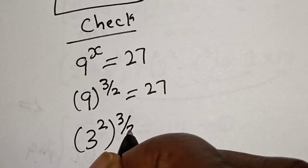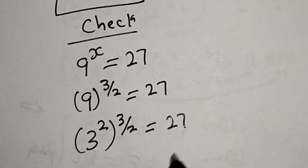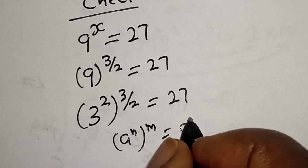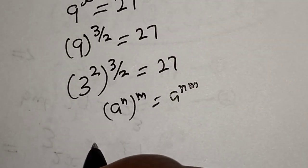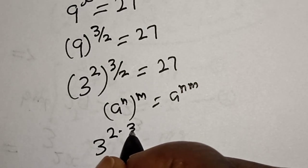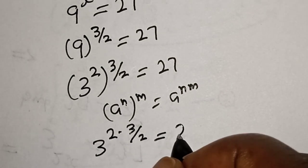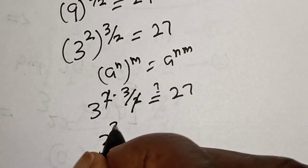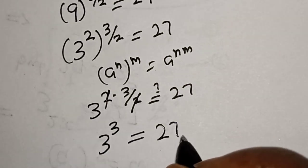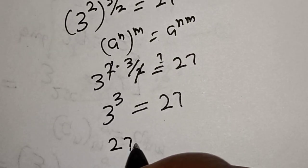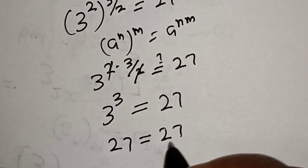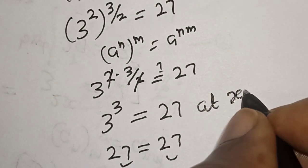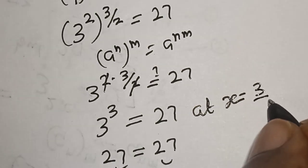So 3 squared, raised to power 3 over 2, is equal to 27. Applying the exponent rule, this is 3 raised to power 2 multiplied by 3 over 2. The 2s cancel, giving us 3 to the power of 3, which is equal to 27. The left hand side 27 equals the right hand side 27. We satisfy the given equation at s equal to 3 over 2.